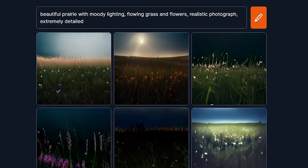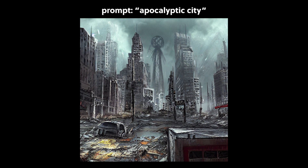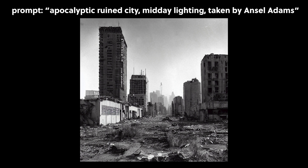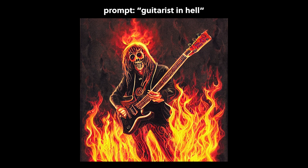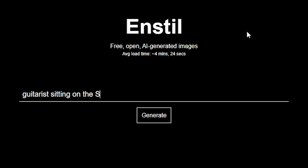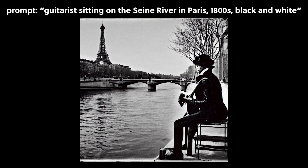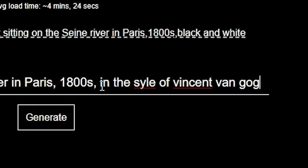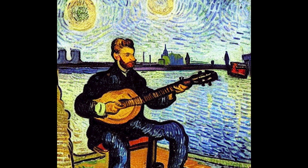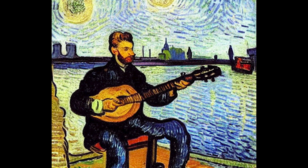You can input anything you want into the system, and you can be as generic or as detailed as you want. Simple phrases like 'guitarist in hell' will still give you some interesting results, but you can also ask for specific locations and styles — like 'guitarist sitting on the Seine river in Paris, 1800s black and white,' or add some color with 'in the style of Vincent van Gogh.' The more detailed you are with the system, the better the results will be.